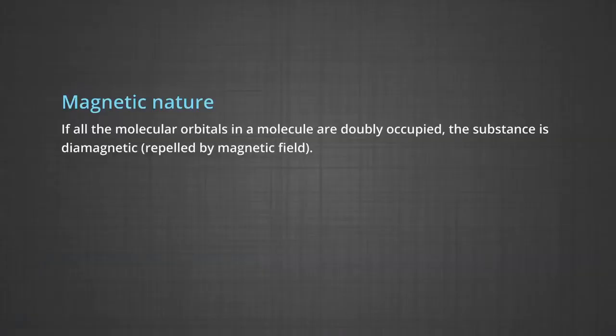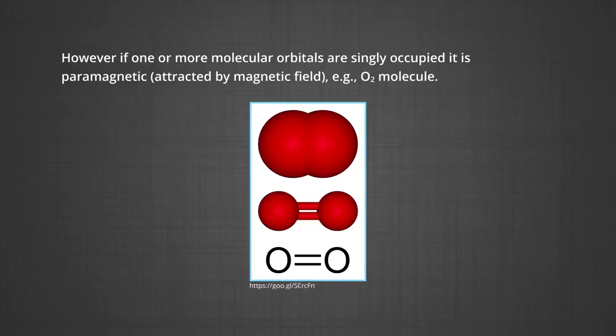Magnetic nature: if all molecular orbitals in a molecule are doubly occupied, the substance is diamagnetic — all electrons are paired and it is repelled by the magnetic field. However, if one or more molecular orbitals are singly occupied, that is unpaired electrons are present, it is paramagnetic and attracted by the magnetic field. For example, the oxygen molecule.